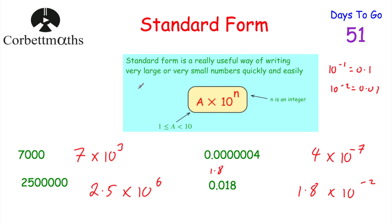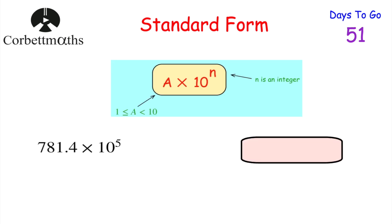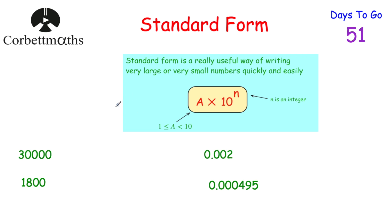That's how you write large and small numbers in standard form. Now here's something for you to try. First: 30,000. That's going to be 3 × 10 to the power of — we need to move the 3 one, two, three, four columns to the left — so it's 3 × 10⁴. Let's check: 10⁴ = 10,000, times 3 = 30,000. Fantastic.